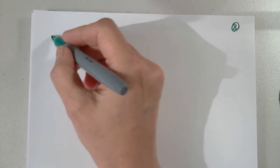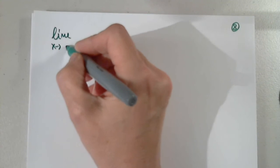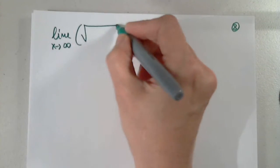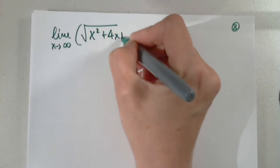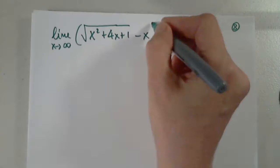We're asked to determine two limits. Let me look. Yeah. So we have limit as X approaches infinity from the square root of X squared plus 4X plus 1 minus X.